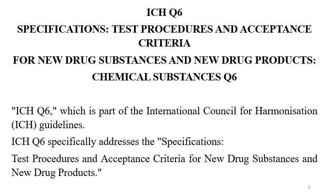As ICH quality guideline provides you the quality requirements or quality parameters which are required to be fulfilled, Q6 guideline mainly provides you the understanding and requirements about specifications, tests, and acceptance criteria.